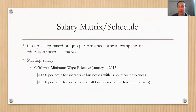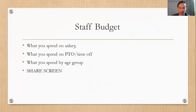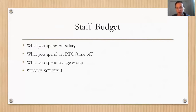A salary matrix or schedule is based on job performance, time at the company, and education or permits achieved. Many of you are already in step programs — your permit level determines your hourly rate. Currently the minimum is $10.50 for employers with fewer than 25 employees and $11 for those with 26 or more. When budgeting for staff, you need to know what you spend on salary, paid time off, and costs broken down by age group — infant rooms cost significantly more than preschool rooms because the ratios are so much smaller.